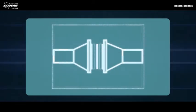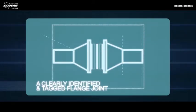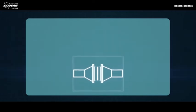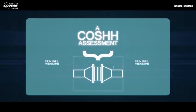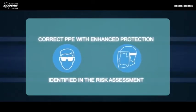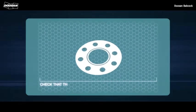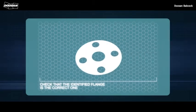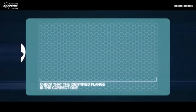A clearly identified and tagged flange joint. A caution assessment to identify the previous contents of the line, with control measures implemented to prevent uncontrolled spillage or exposure. Correct PPE with enhanced protection identified in the risk assessment. Check that the identified flange is the correct one. If in doubt, stop and contact your supervisor.